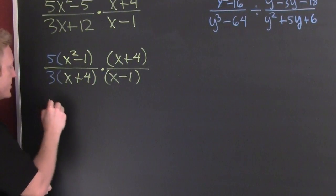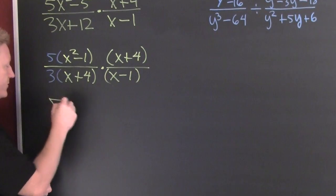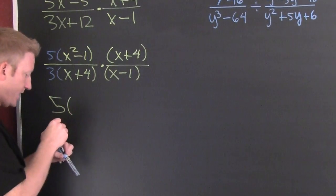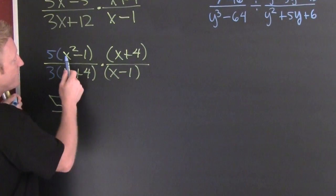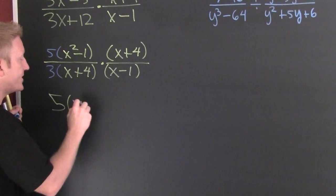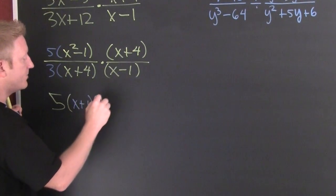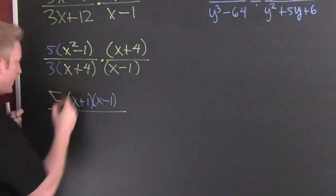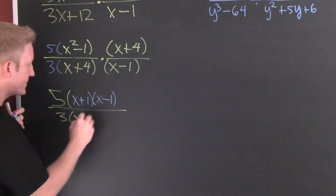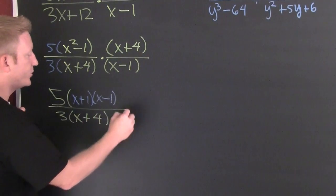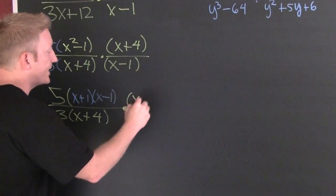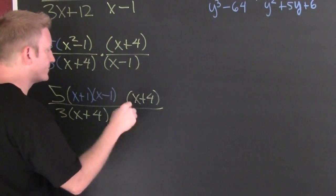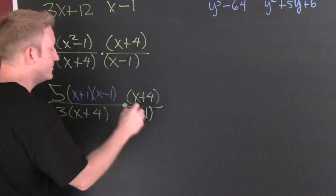So I'm going to have five times — that's the square of x, that's the square of one — so this is x plus one, x minus one. Divided by three, times x plus four, and then I'm going to multiply that by x plus four, divided by x minus one.